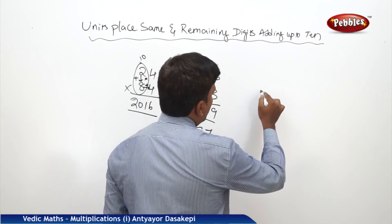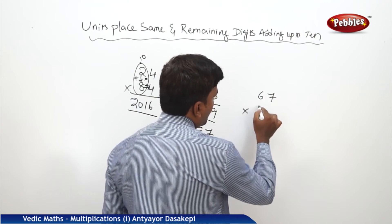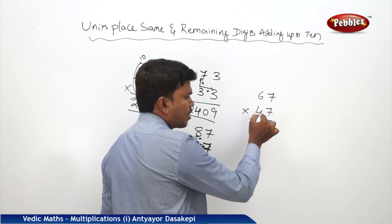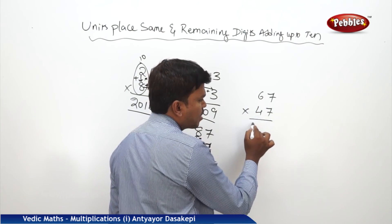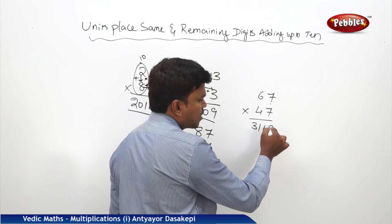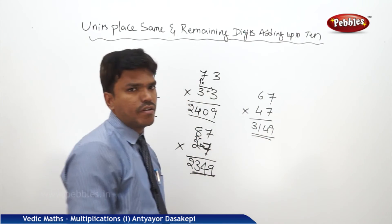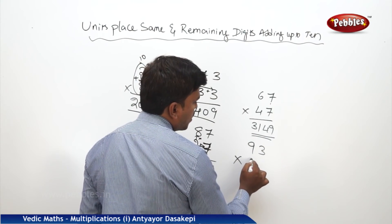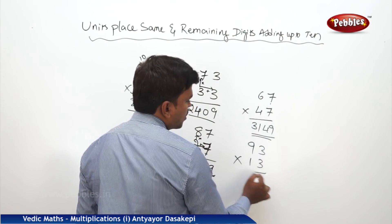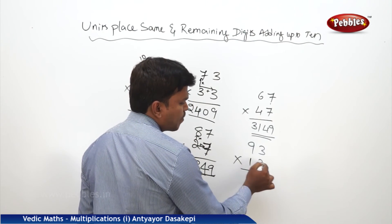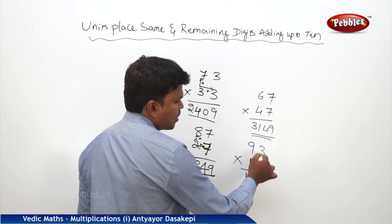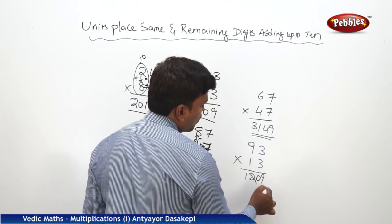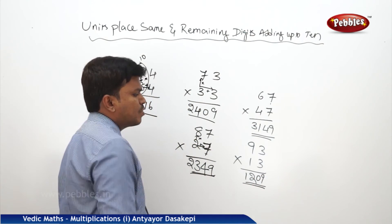Suppose 67 into 47. 6 times 4 is 24. 24 plus 7 is 31. What is 7 times 7? It is 49. So your answer is 3149. Similarly, 93 into 13. What is 9 times 1? It is 9. 9 plus 3 is 12. Write 12. What is 3 times 3? It is 9, but written as 09. So your answer is 1209.